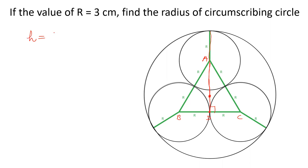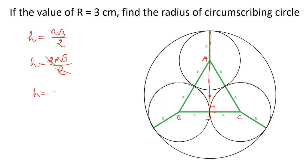The height of this equilateral triangle is root 3 by 2 times the side. The side of the triangle is 2r, since AB, AC, and BC are each of length 2r. So height equals 2r times root 3 by 2, the 2s cancel, giving height equals r root 3.